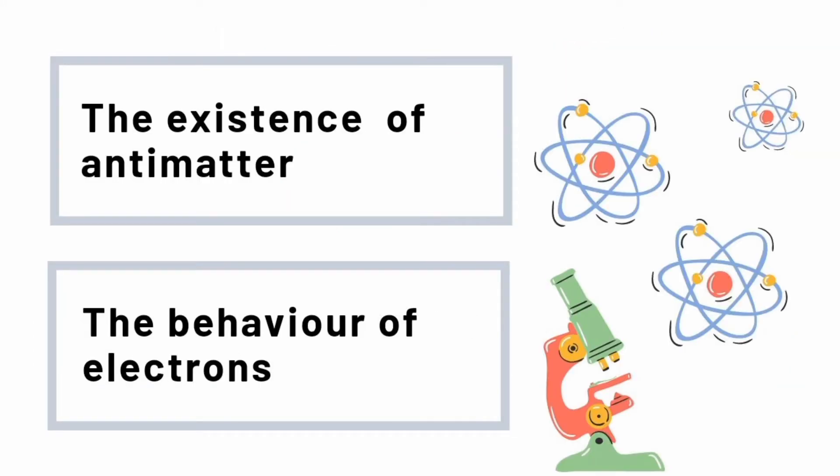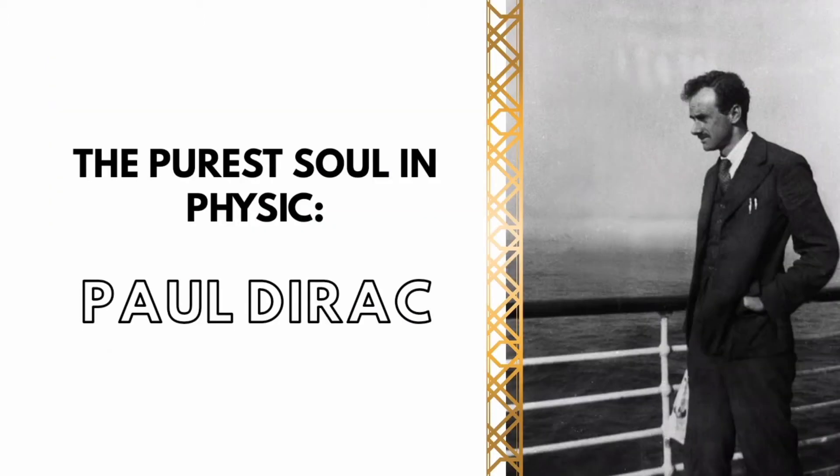The existence of antimatter is explained by the Dirac equation, which also explains the behavior of electrons. The founder of the equation was one of the greatest theoretical physicists in history: Paul Dirac.